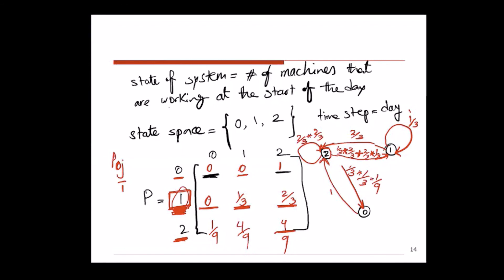So that is the one-step transition probability matrix for this problem. It helps to also show the transitions on one graph — the state diagram. If there is no possible transition between two states, we don't put any arrow between them. This graphical representation is called a state diagram.